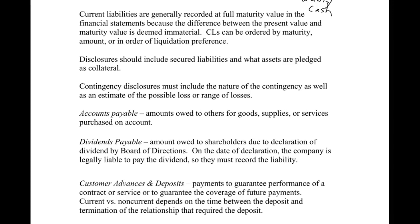Contingency disclosures, which is the second half of the chapter, we'll get to in a future video. The disclosure must include the nature of the contingency as well as an estimate of the possible loss or range of losses. When you look at your textbook, regardless of which book you're using, you'll see a list of different types of current liabilities. I'm going to walk through some of them now. I took notes payable out and I'll do that in a separate video, along with some of the other ones.